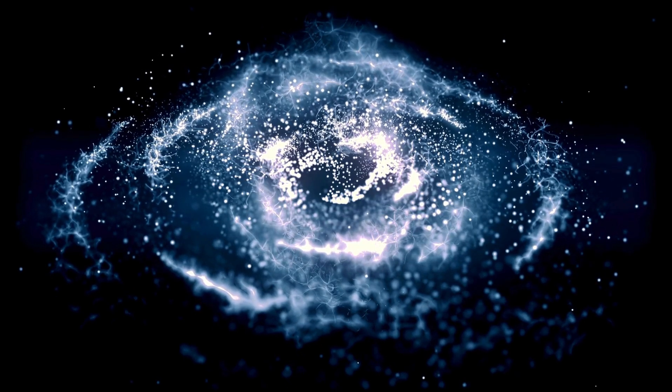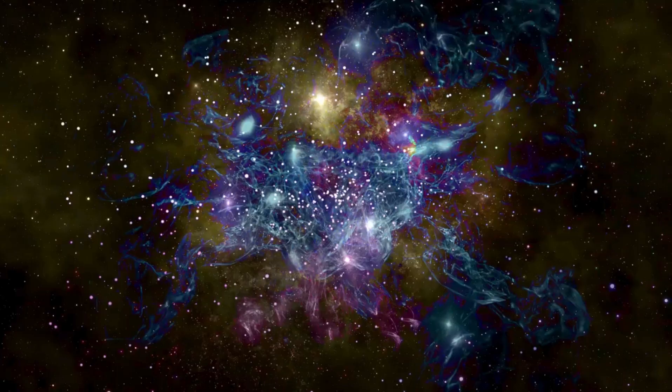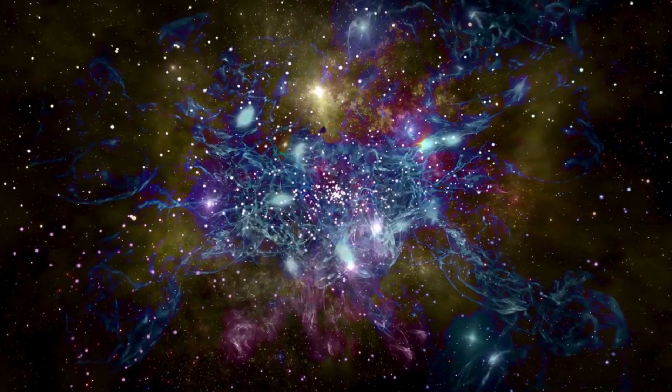But the James Webb telescope is able to look further than any other piece of technology has ever done before. One of the craziest things it's detected is the presence of 770 galaxies inside a black hole. This shouldn't be possible because it challenges the way black holes work.